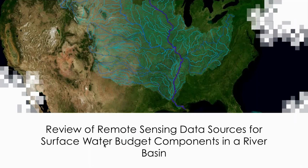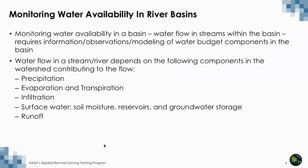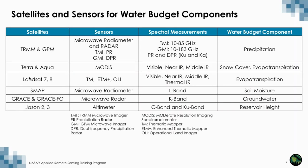We'll start with a review of remote sensing data sources we saw earlier. When you want to monitor water availability in a basin or freshwater availability, these are the major components needed: precipitation, evaporation, evapotranspiration, infiltration in soil, surface water such as soil moisture, reservoir storage, groundwater storage, and runoff. These components provide a complete water budget. We're going to focus more on the surface components in this webinar. We talked about several satellites, sensors, and spectral measurements which are used for deriving these water budget components.